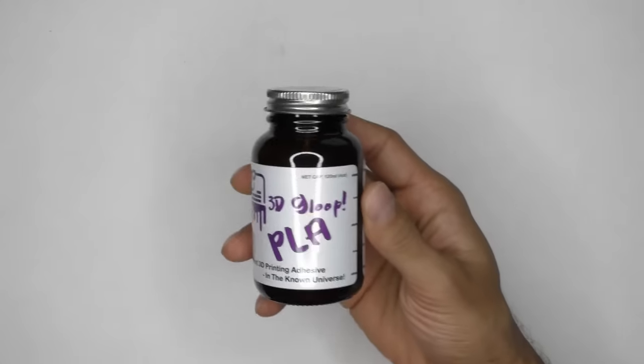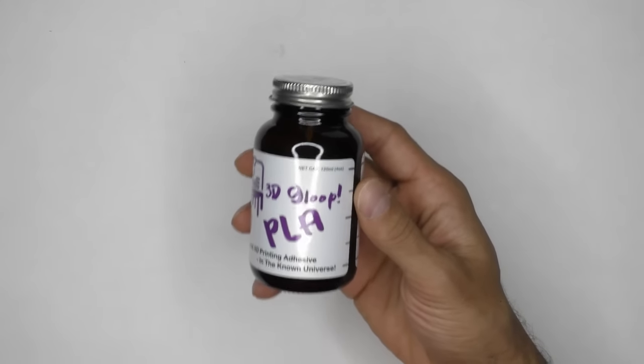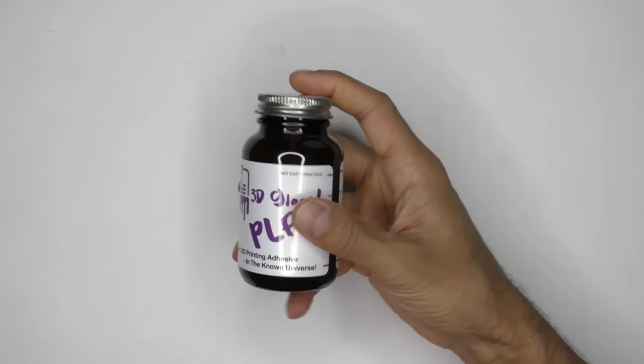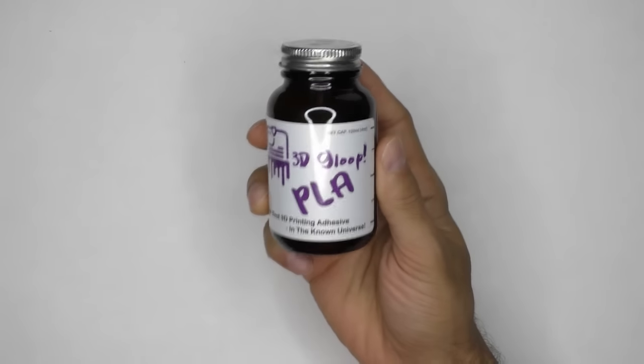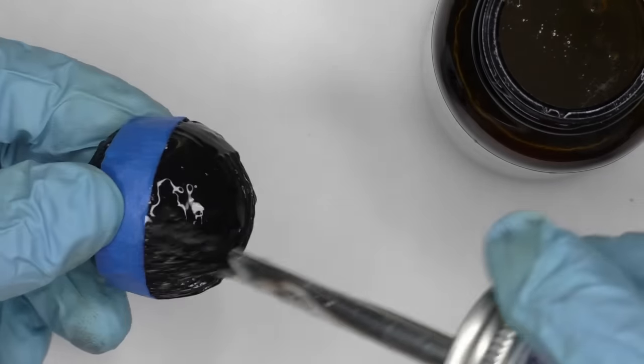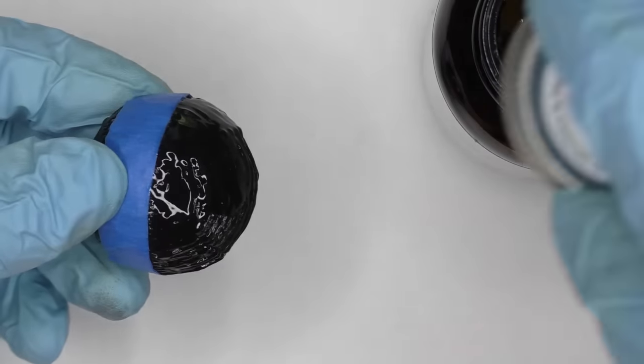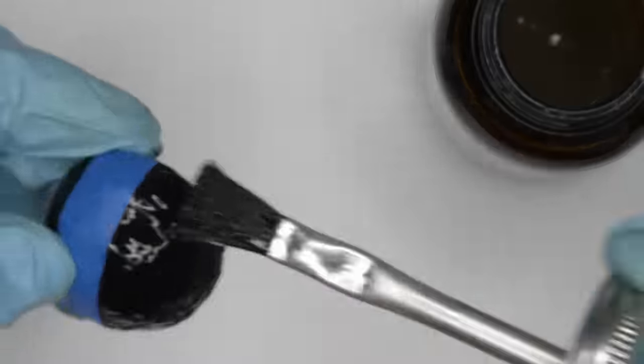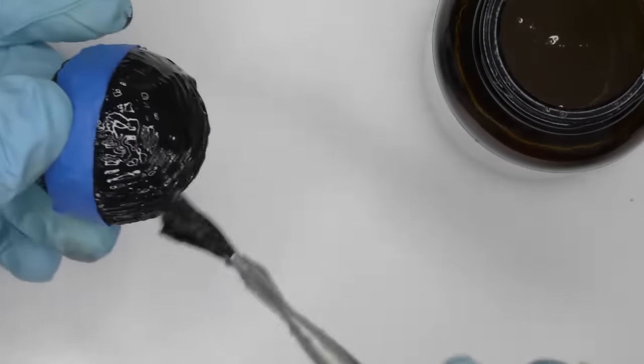Alright, let's now add some Gloop to our test case. One important item that I noticed was you need to make sure to shake your Gloop before applying it. Otherwise, the results can vary wildly. Here's the first application of Gloop. I'm trying to apply a thin, even coat. I can see it begin acting on the surface almost immediately. Definitely be careful to not apply too much.